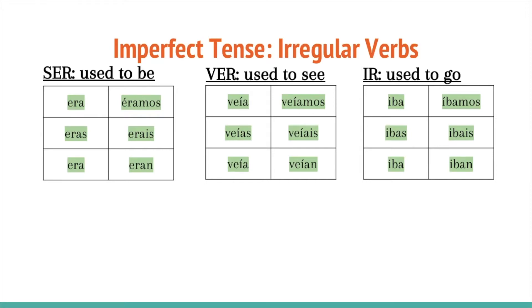Ver means 'used to see.' The conjugations are: veía, veías, veía, veíamos, veíais, veían.